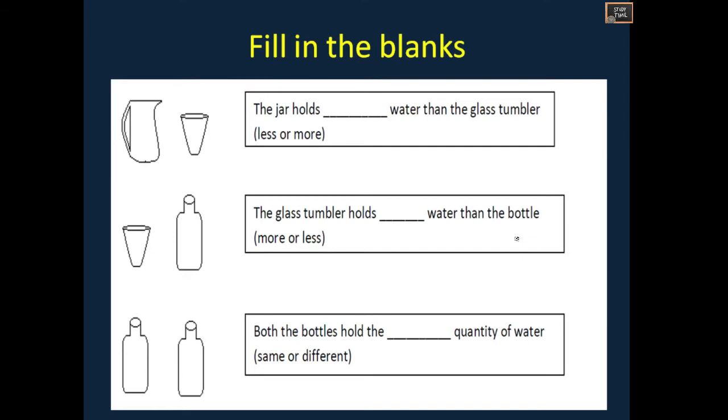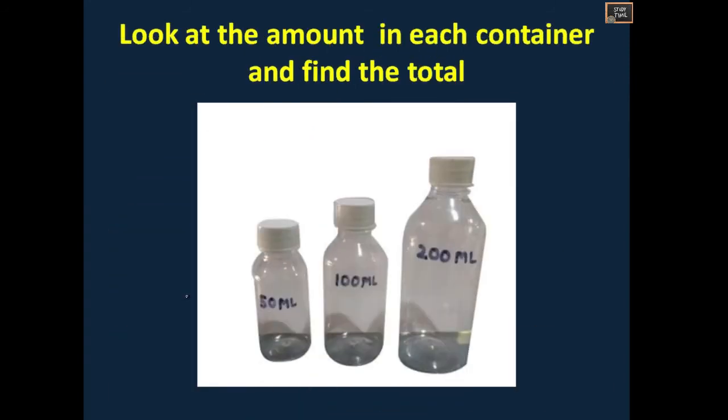Next question, filling the blanks. The jar holds - here which is jar, this is jar, this is jar, this is tumbler. Jar holds more water than the glass tumbler. Here this is tumbler, here this is bottle. The glass tumbler holds less water compared to bottle. Here both the bottles hold the same quantity of water.